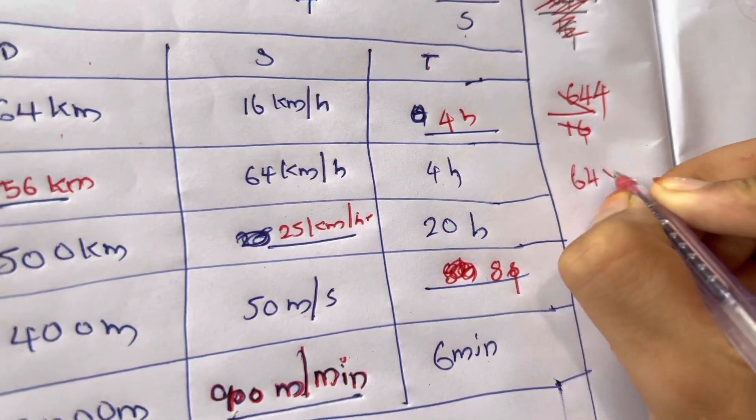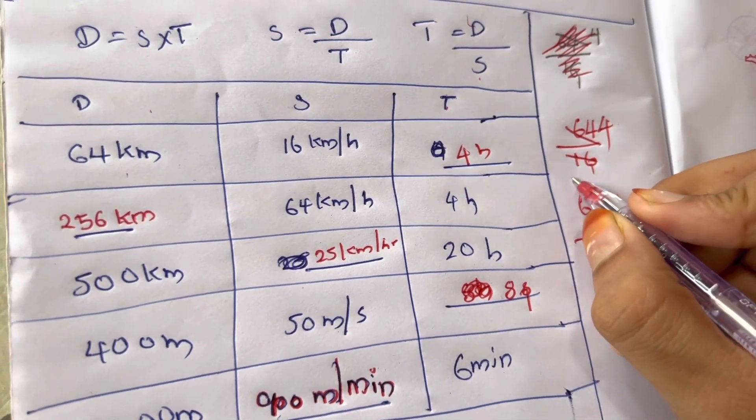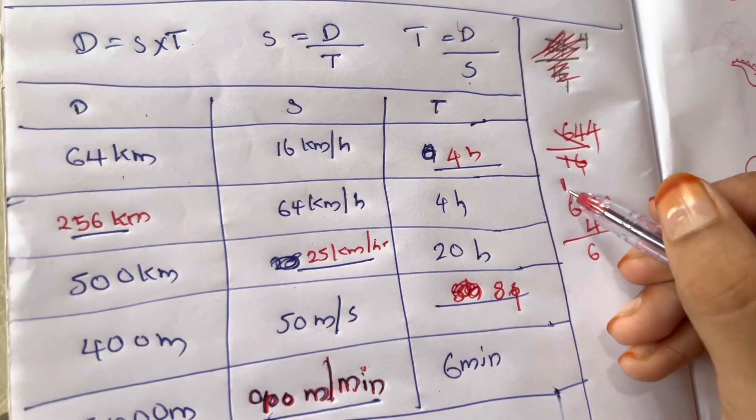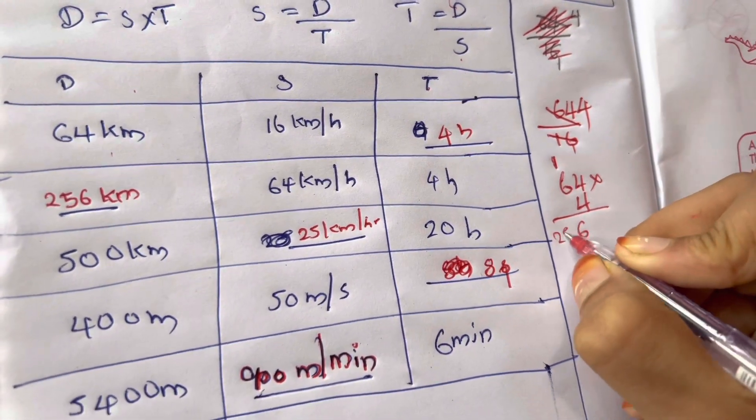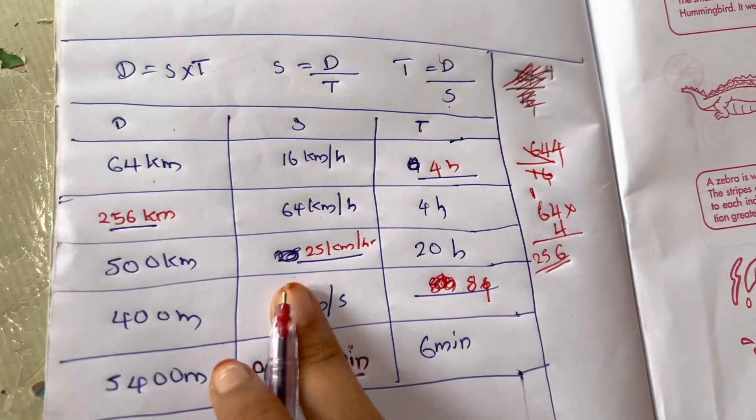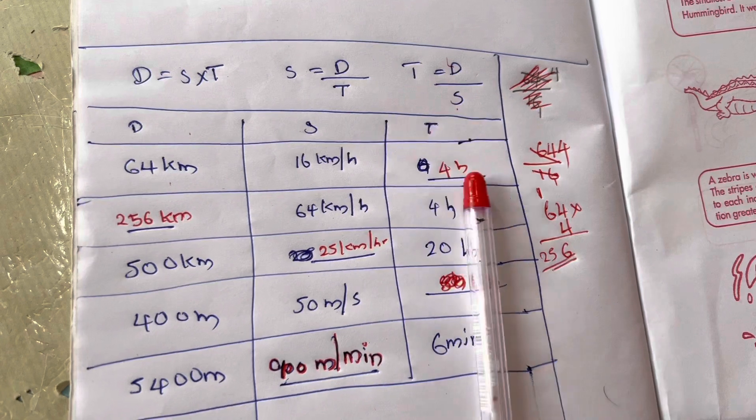64 into 4 equals 256. 4 into 6 is 24, plus 1 is 25. After this, we need to find speed. Speed equals distance divided by time.